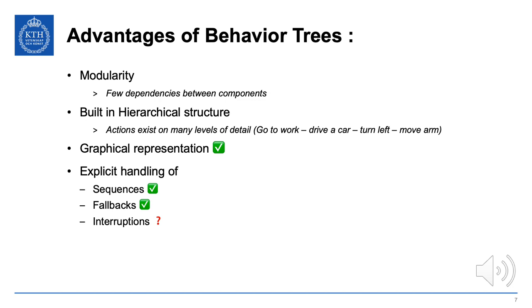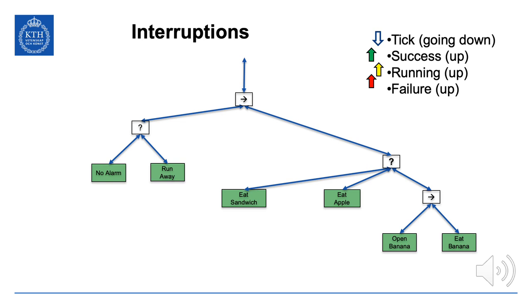Looking back at the advantages of behavior trees, we haven't yet looked at modularity or hierarchical structure. We did see the clear graphical representation and the explicit handling of sequences and fallbacks. Now let's look at interruptions.